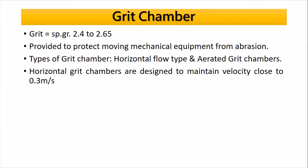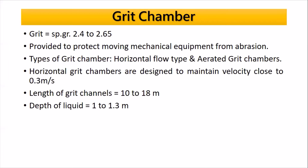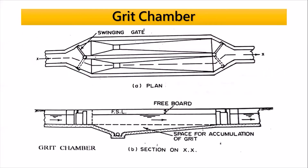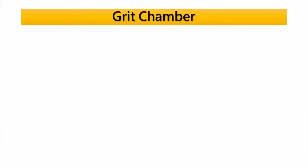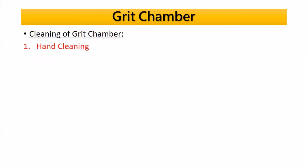Horizontal flow grit chambers are designed to maintain the velocity close to 0.3 meters per second. The length of the grit channel is 10 to 18 meters, and the depth of liquid is 1 to 1.3 meters. This is a diagram showing the plan and section of the grit chamber.